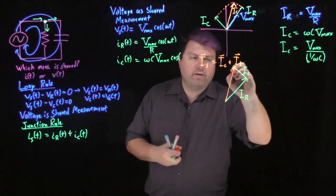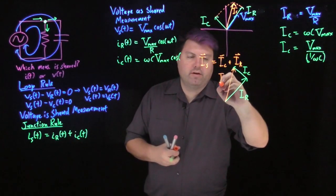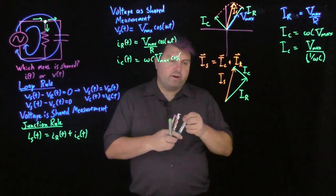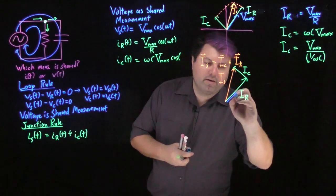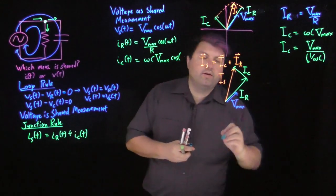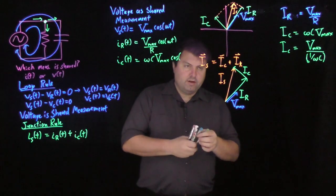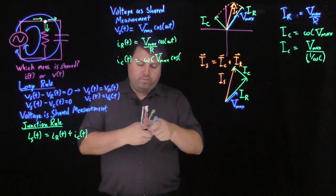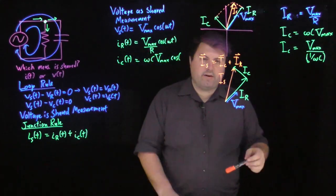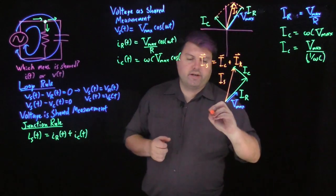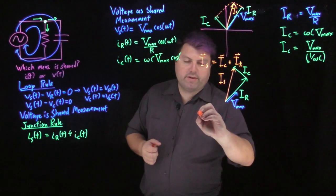And then we have our I sub s. And we have our voltage, which is the shared measurement. So this looks hopefully pretty good. Hopefully we feel pretty good about all of this. It's just we're adding currents instead of voltages now.